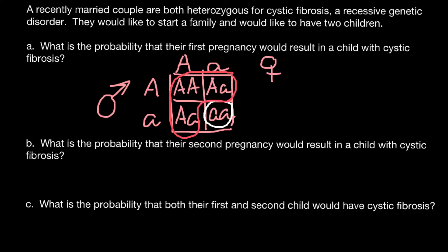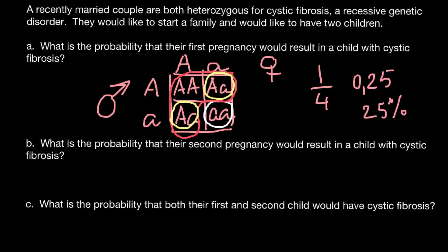Two out of four would be carriers, but these carriers would be phenotypically normal. So the answer for this question would be that the probability is one out of four, or we can also say this is going to be 0.25 on a scale between zero and one, or 25% on a scale between zero and 100%. All these answers would be correct.